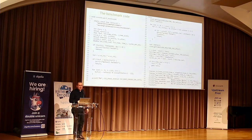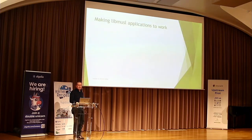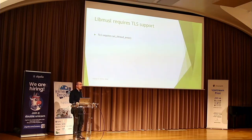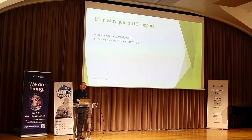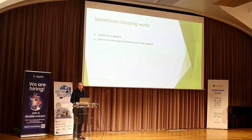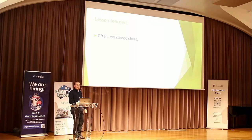The benchmark code just writes some letters on screen and forces scrolling to happen. There's also a story about how I tried to make musl libc applications work — they required TLS support, meaning implementing a separate GDT area. I tried to cheat by returning NOPs, returning zero, returning zero and setting a descriptor number — and I was punished and couldn't cheat. Sometimes we cannot cheat.